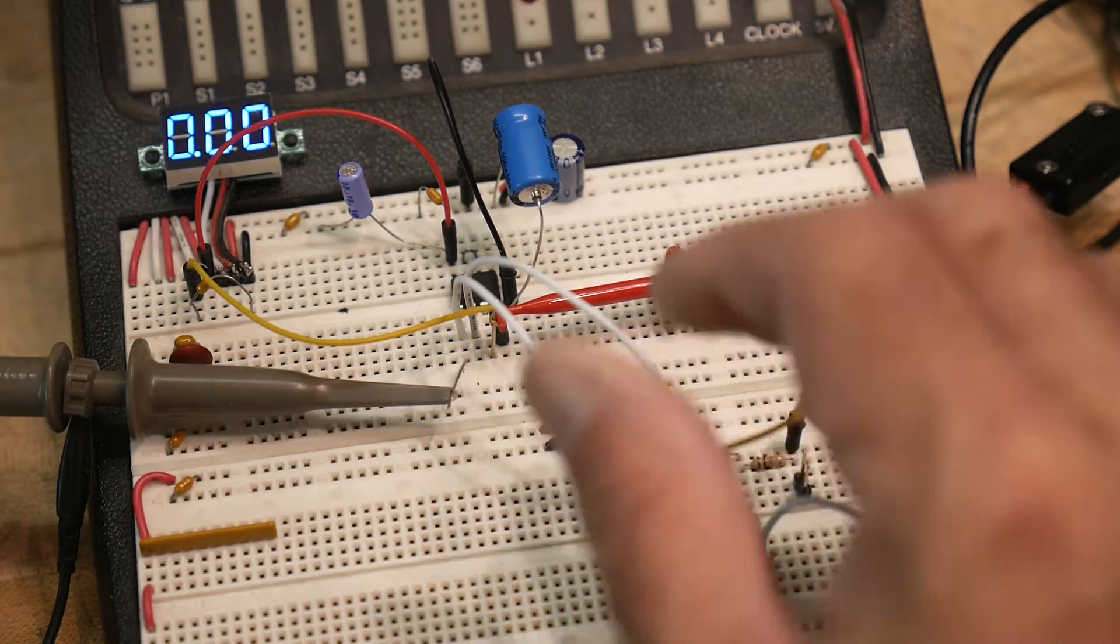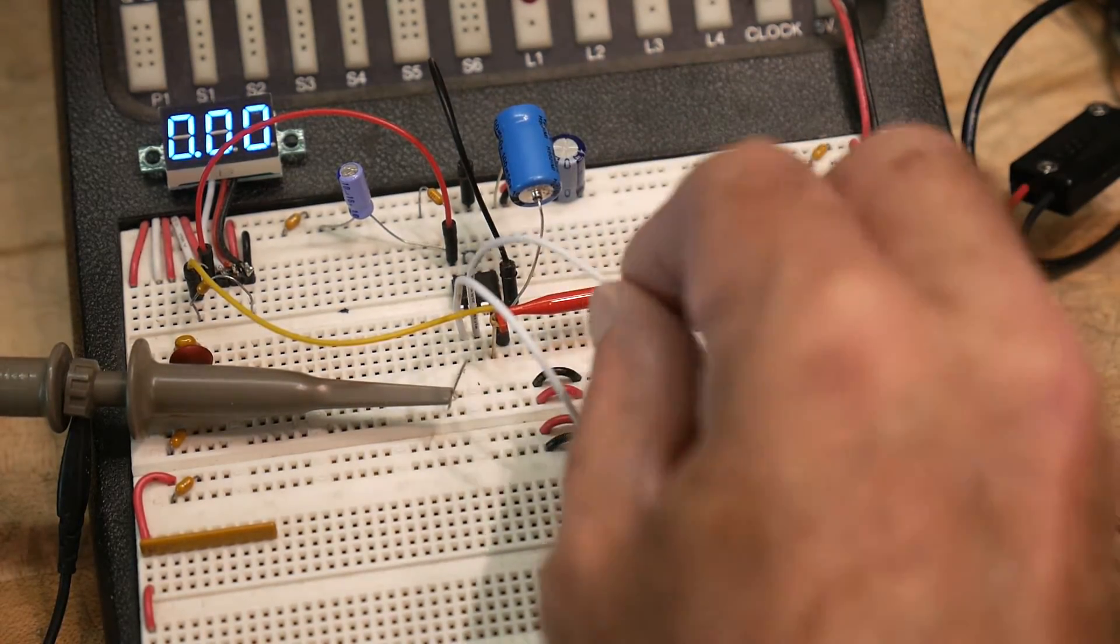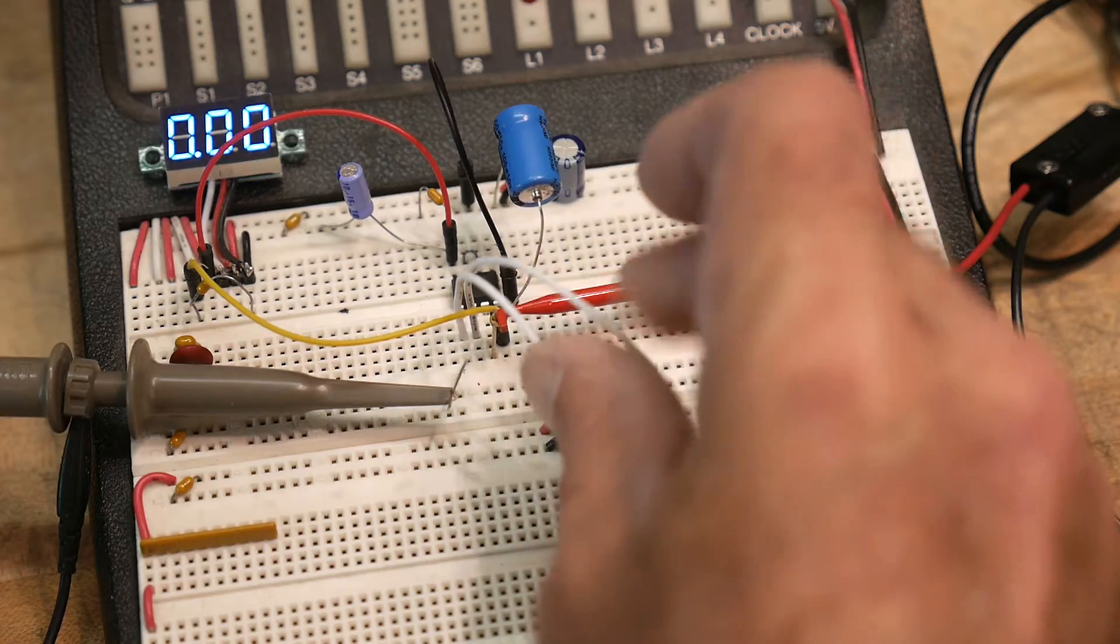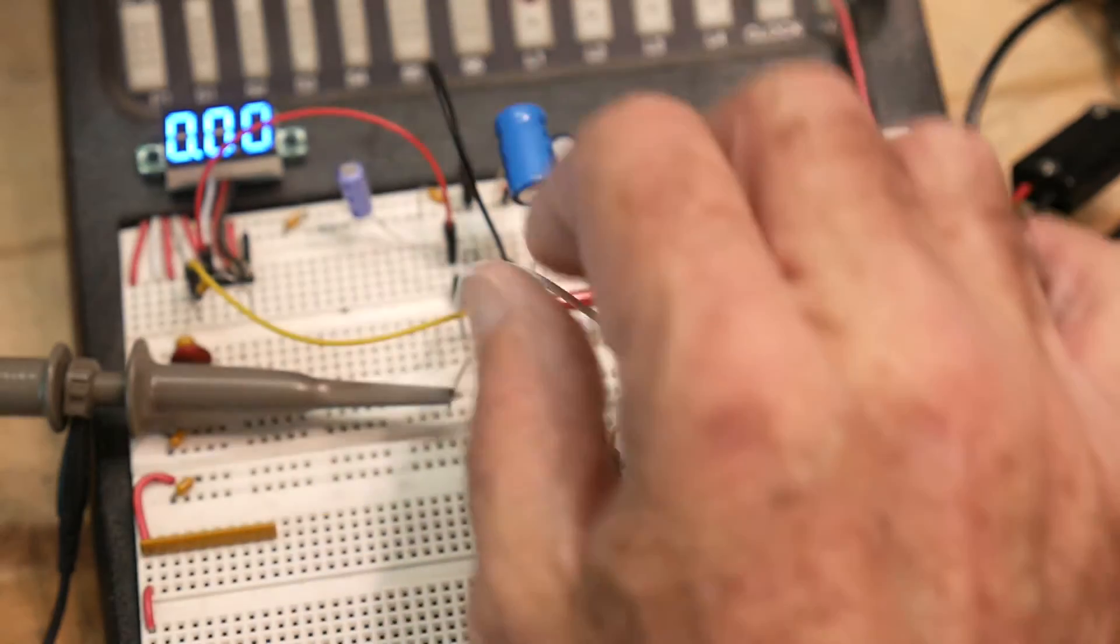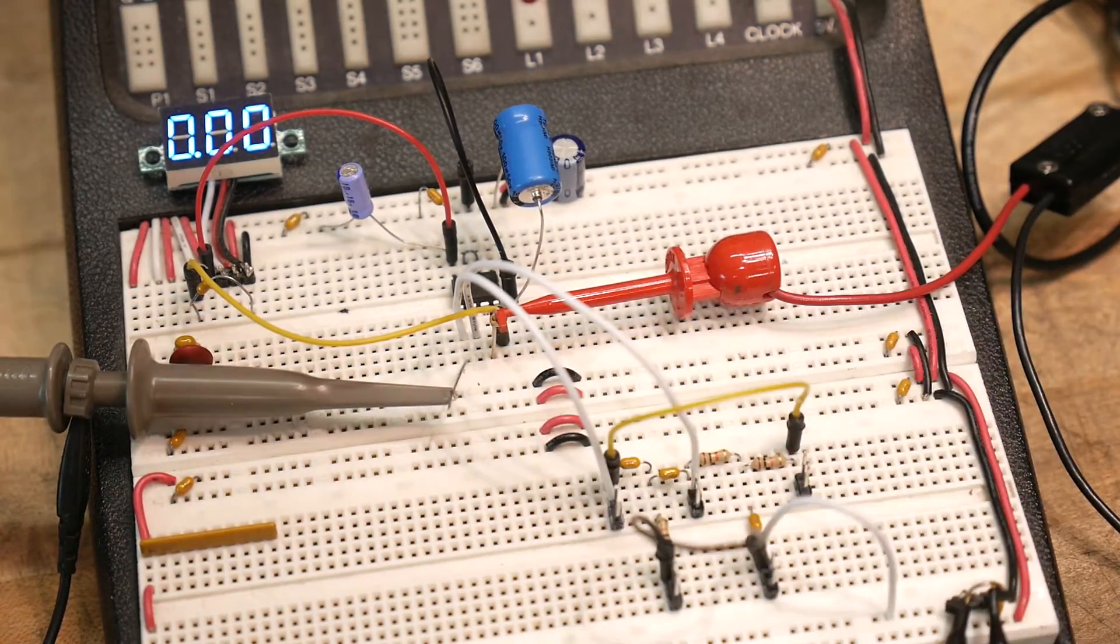What I'm going to do is take the input and output filter on these two wires and run it up here to this op-amp circuit that I had left over. Let's see what that does.